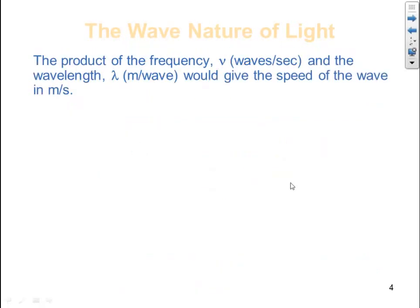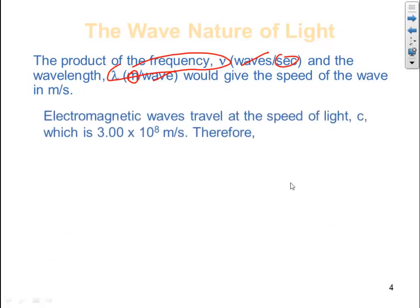The product of the frequency, which is waves per second, and the wavelength, which is meters per wave, will give you the speed of the wave in meters per second. If I multiply these two together, my waves would cancel, leaving me in meters per second. Electromagnetic waves travel at the speed of light, which is a constant given the symbol C, which is 3.00 times 10 to the 8th meters per second. We know that frequency is proportional to 1 over wavelength, and that proportionality constant is C, the speed of light.